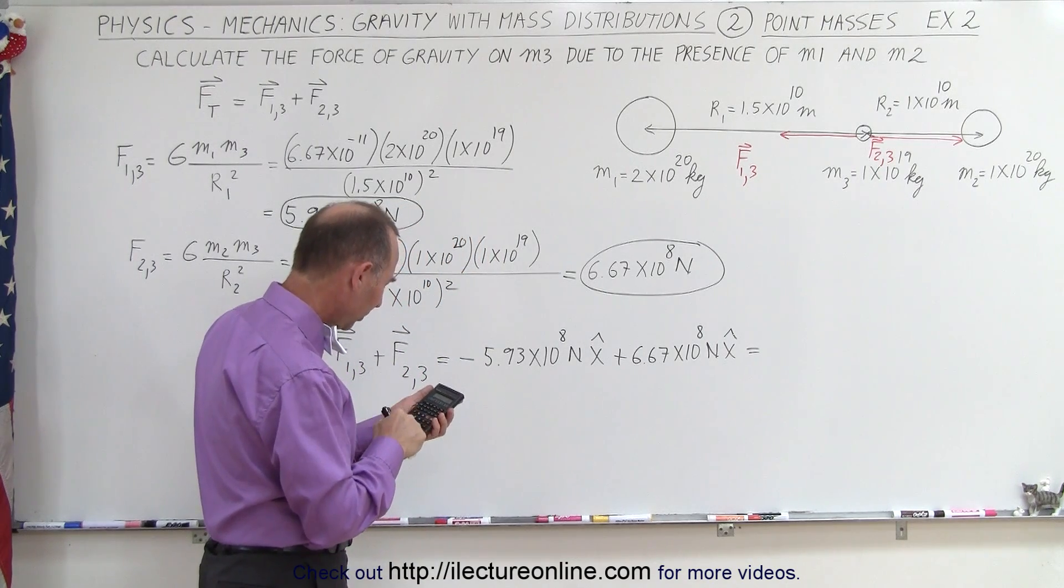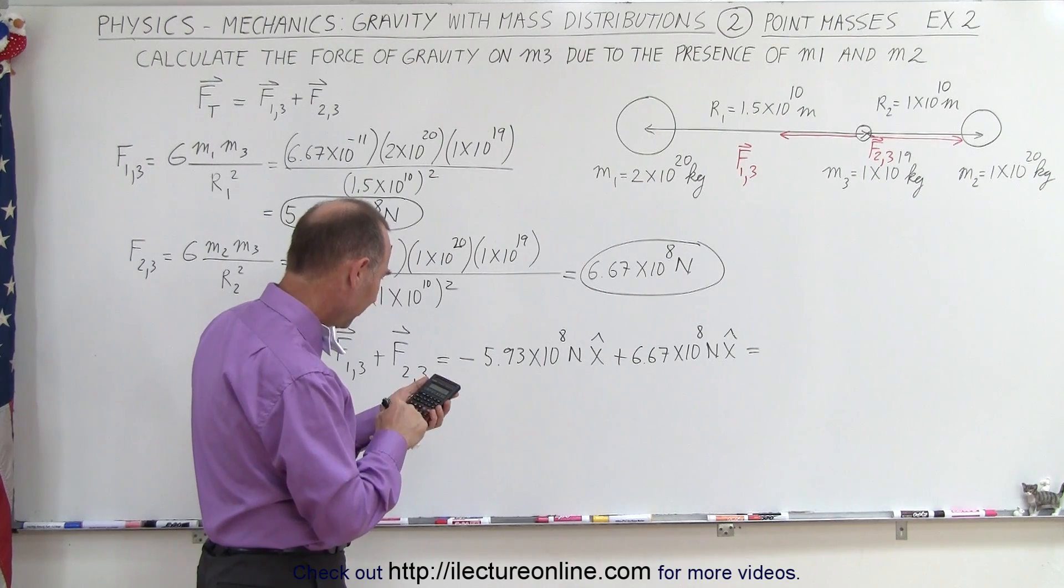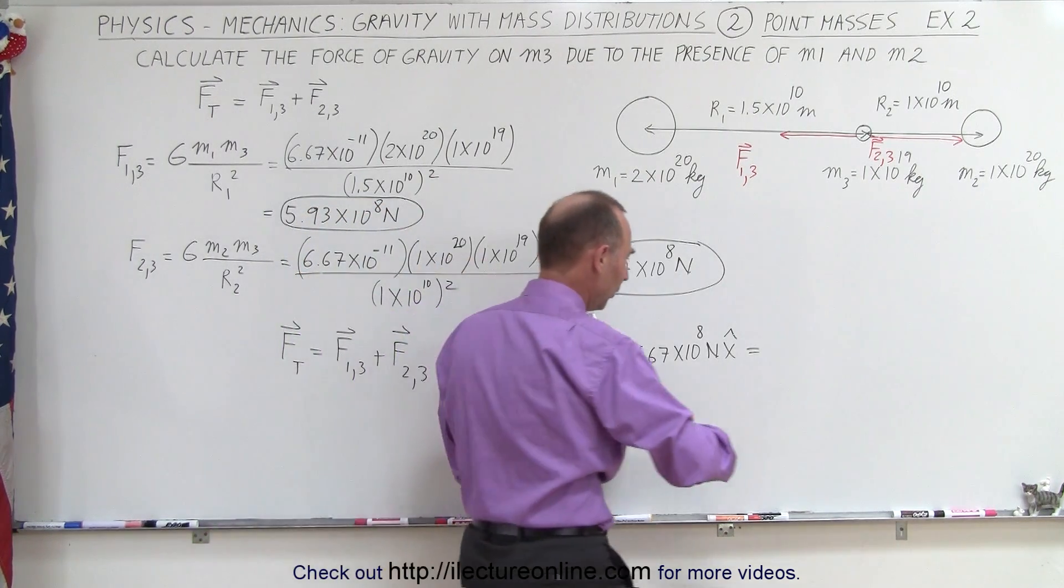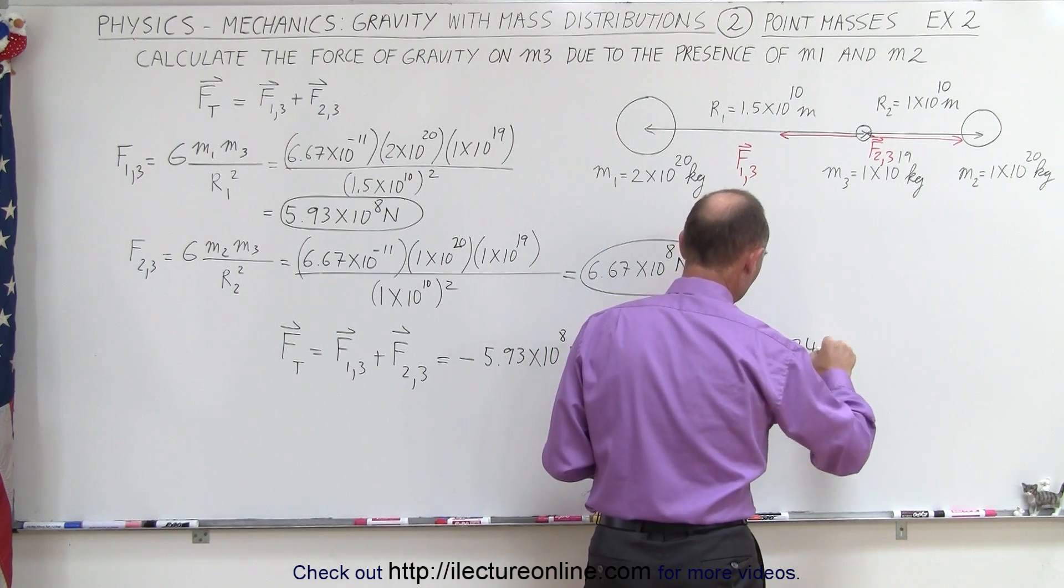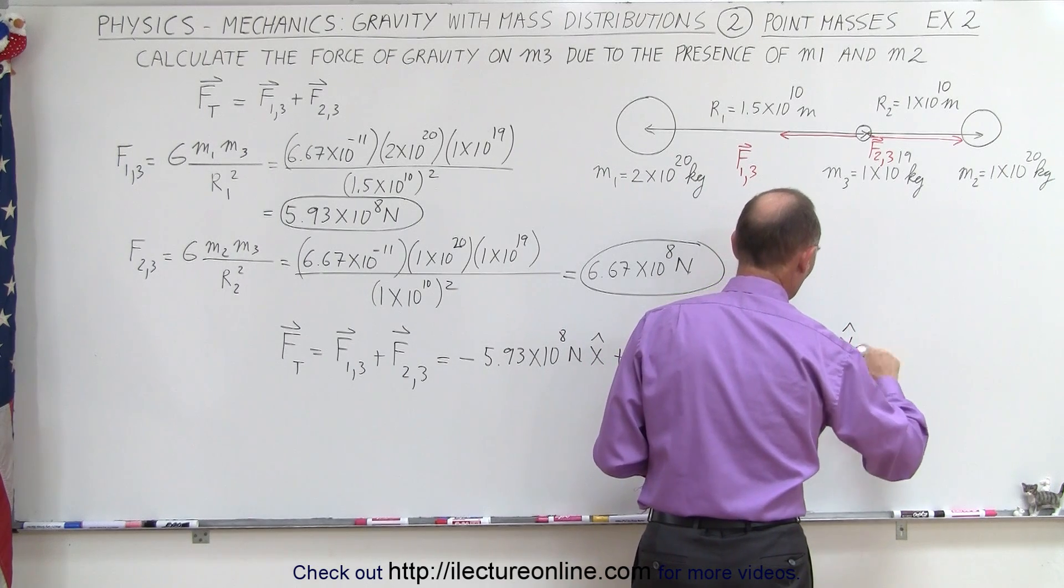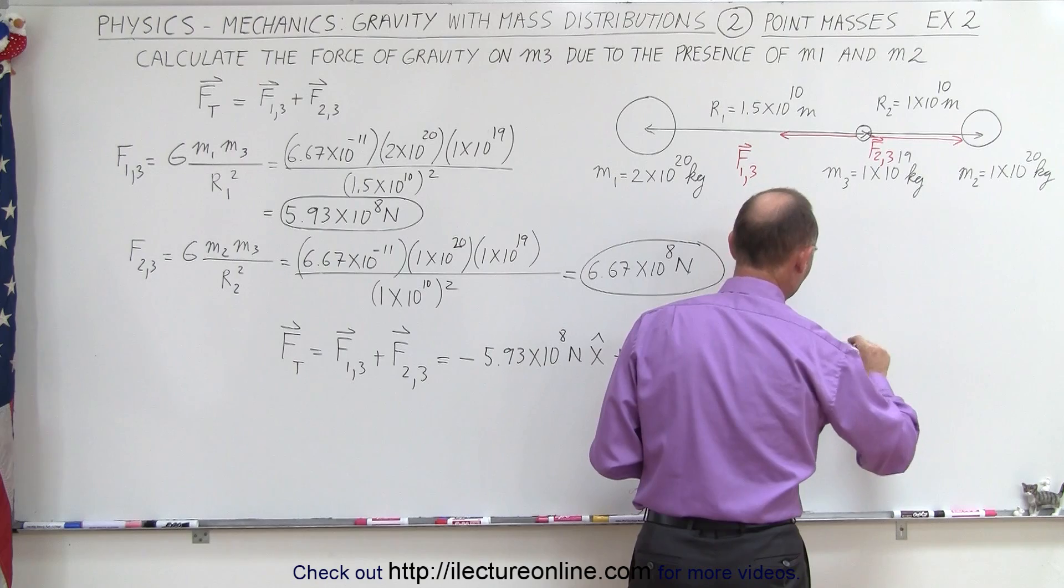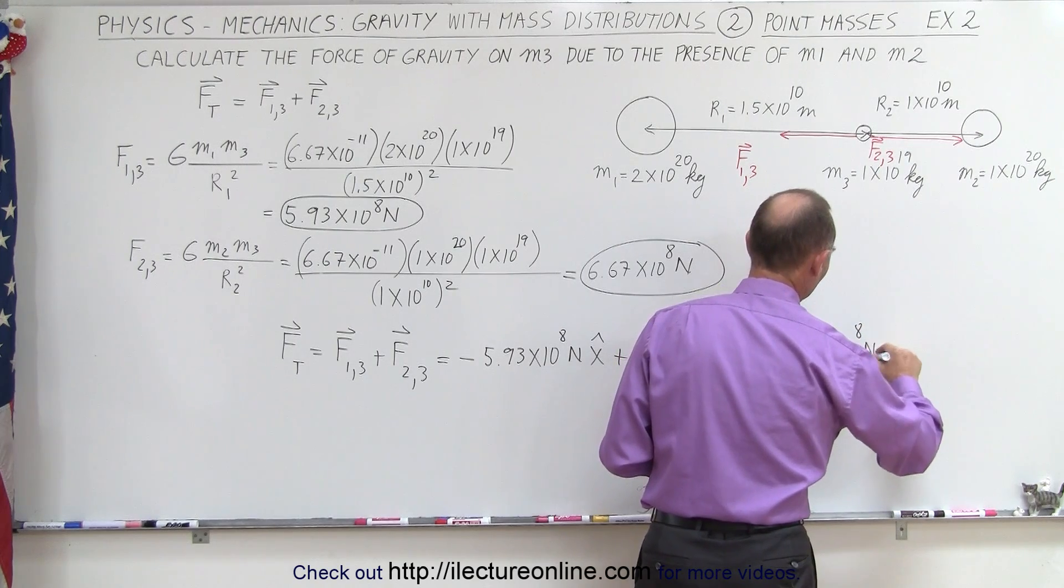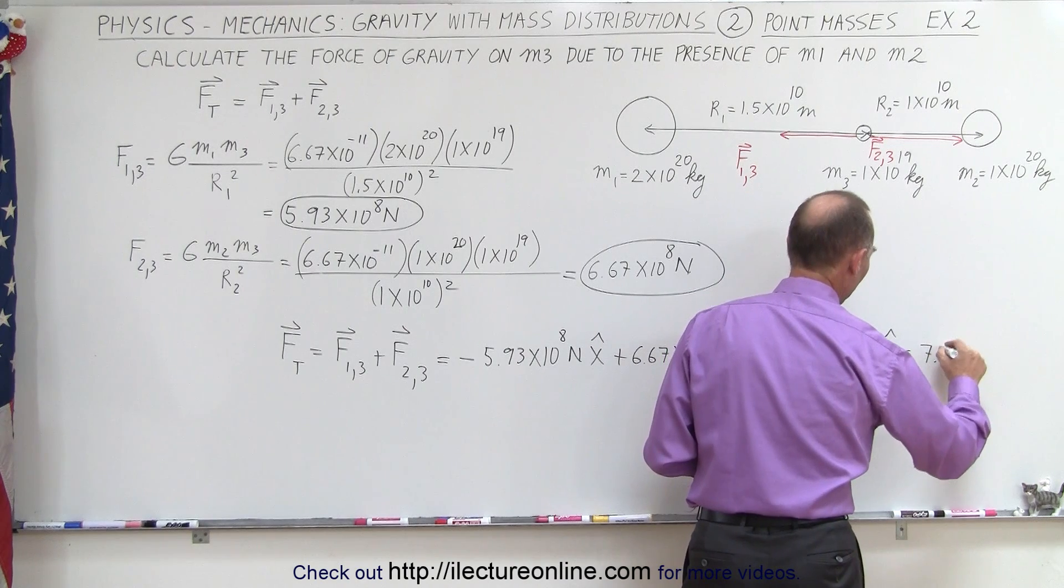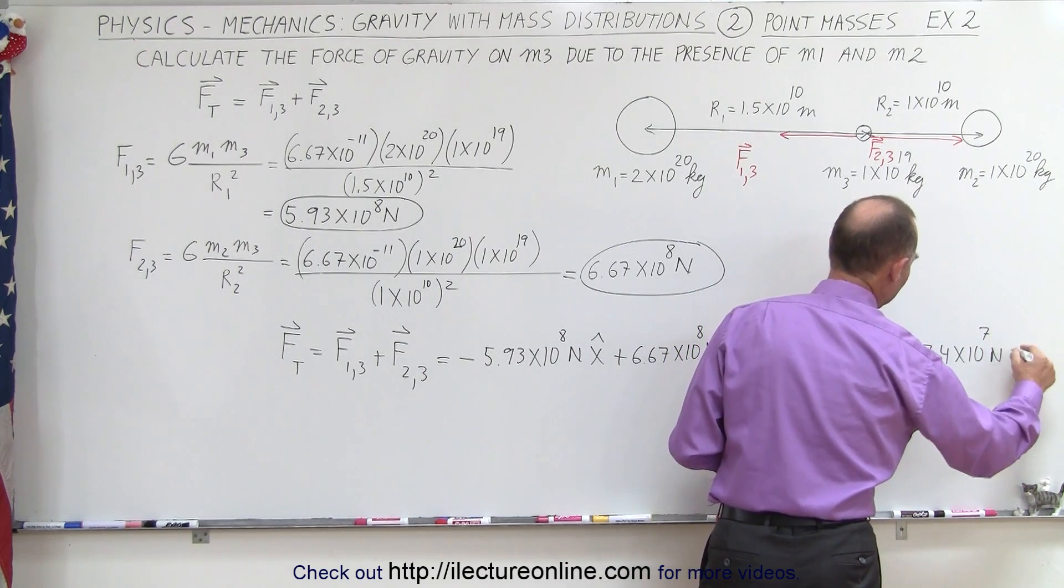And then when we add them together, we end up with 6.67 minus 5.93, so we end up with 0.74, positive in the x direction. I need to add the exponents here, times 10 to the 8 Newtons in the x direction. And then if we want to rewrite it, we can write this as 7.4 times 10 to the 7 Newtons in the x direction.